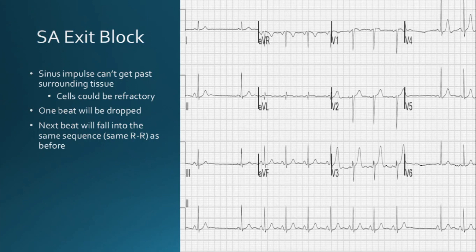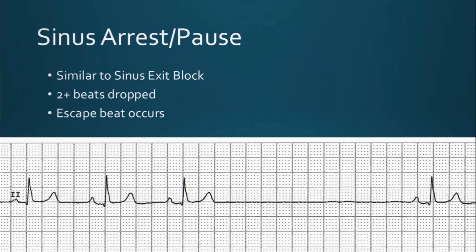We can see an example of this below. You can see the R-to-R interval is the same, so let's march this out. You can see here is where the other QRS was supposed to be, but it was blocked. The next QRS that occurs is in line with the rest of the rhythm. The heart was able to overcome the refractory cells and restart in the same sequence, so the R-to-R interval remains the same.